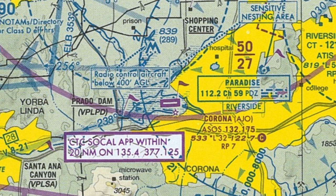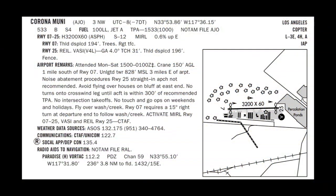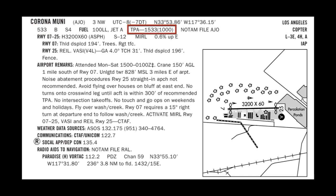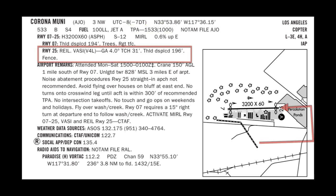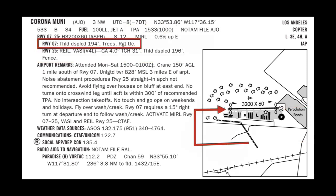For the uncontrolled airport departure procedures, I will use Corona Airport in Southern California, KAJO. Its runways are Runways 7 and 25. The runway is 3,200 feet long and 60 feet wide, with an elevation of 533 feet. Its traffic pattern altitude is 1,533 feet or 1,000 feet AGL. It has a left traffic pattern for Runway 25 and a right traffic pattern for Runway 7, so both traffic patterns at Corona are located south of the airport.